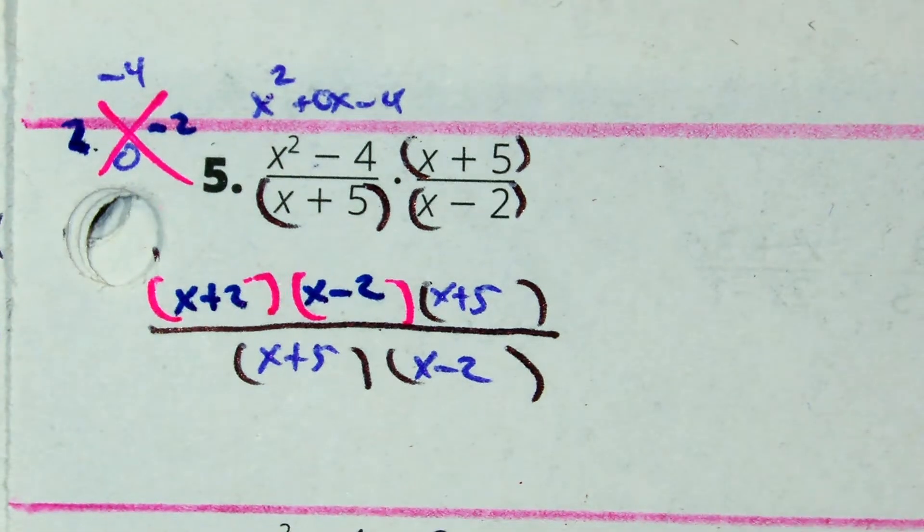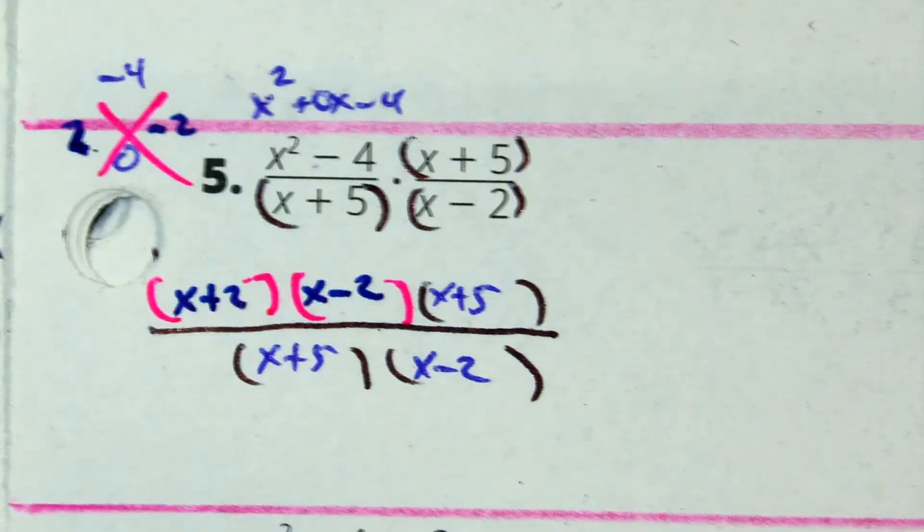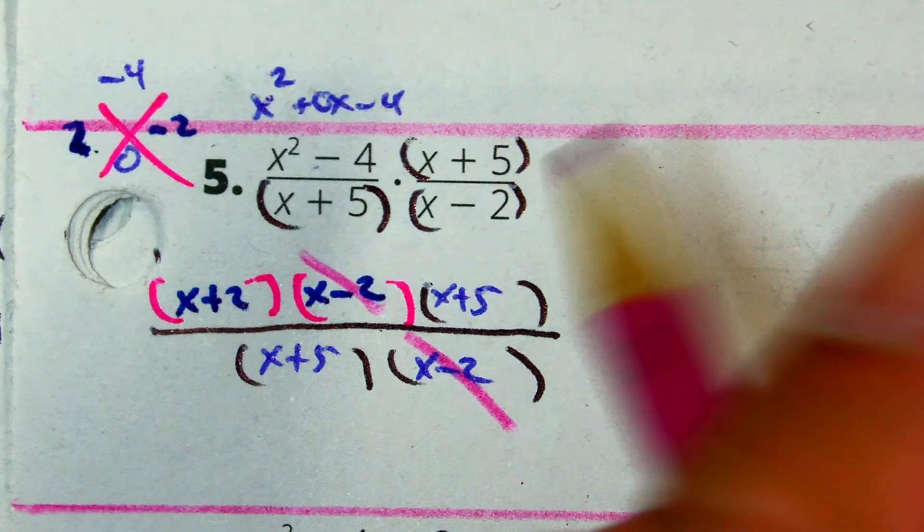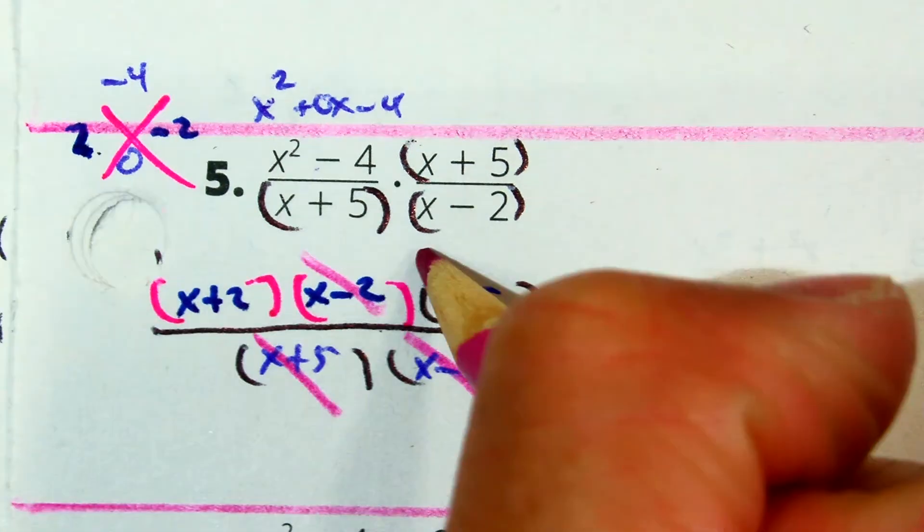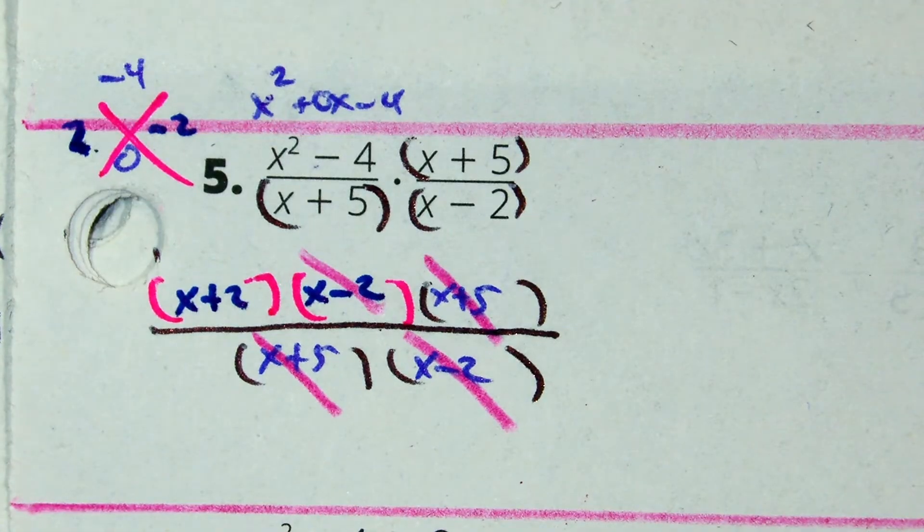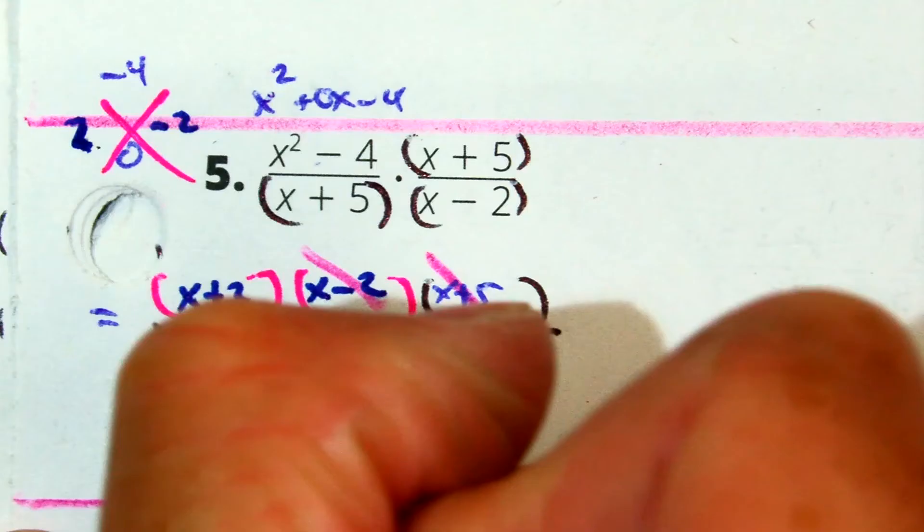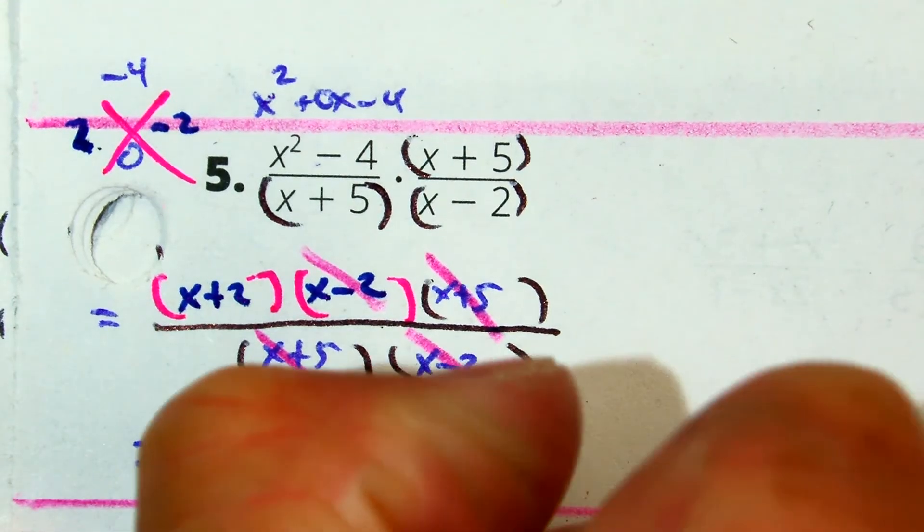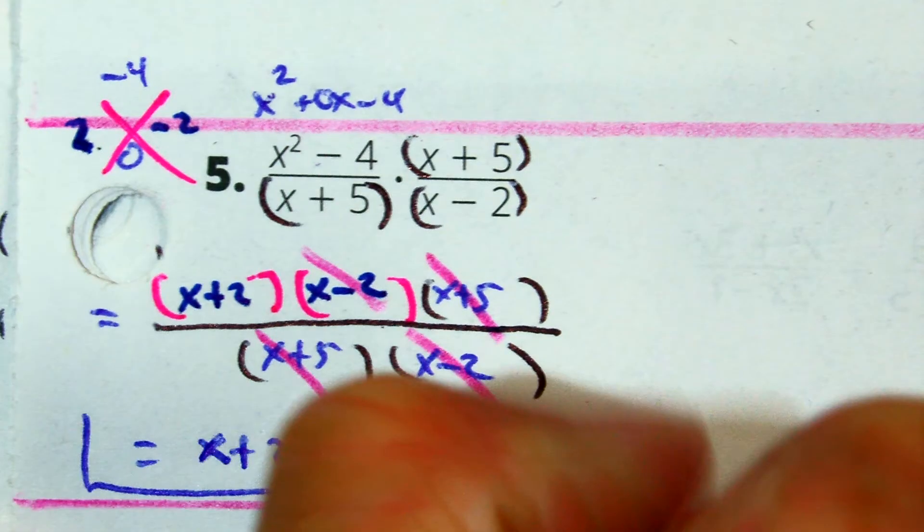x plus 2. 1 for 1. x plus 5. Tell us what's left. Where is that x plus 2? Numerator or denominator? Denominator. Correct. Raise your hand if you got that.